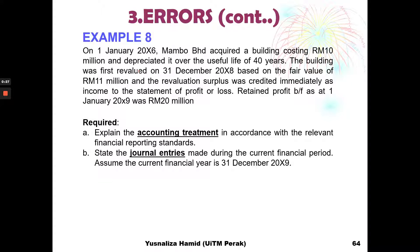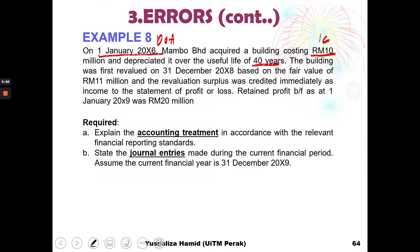Let's move on to example eight, regarding errors. You have this company — Mambo Berhad — which on 1st January 2006 acquired a building costing 10 million. That is the initial cost and the date of acquisition. It was being depreciated over a useful life of 40 years.